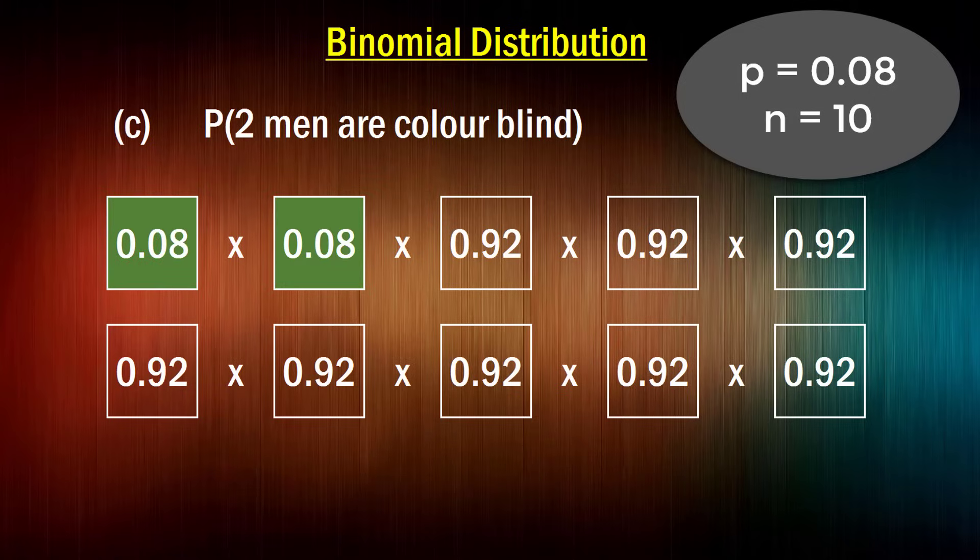Now, how about this next question? What's the probability that two men are colorblind? Now, in this case, we know that two of the men have to be colorblind. So that's 0.08 and 0.08 there. And we know that the other eight men have to not be colorblind. So that's 0.92 times 0.92, etc. So you might think, well, that's just simple. We're just going to raise 0.08 to the power of 2, and multiply that by 0.92 to the power of 8. And that should be our answer. But wait just a second, appreciate that there's numerous ways that this outcome can occur.